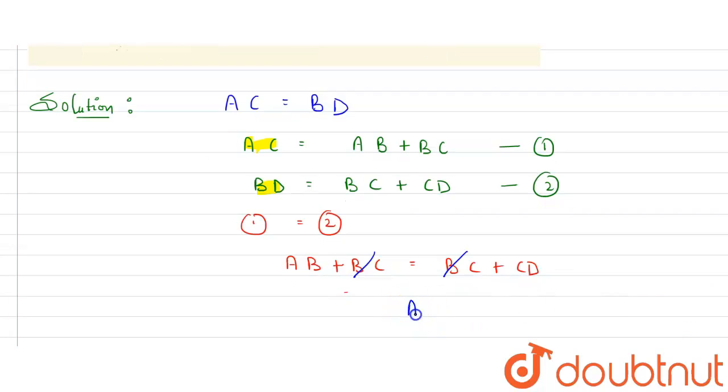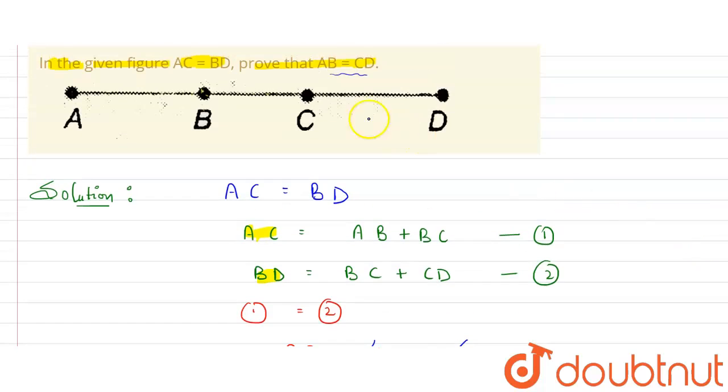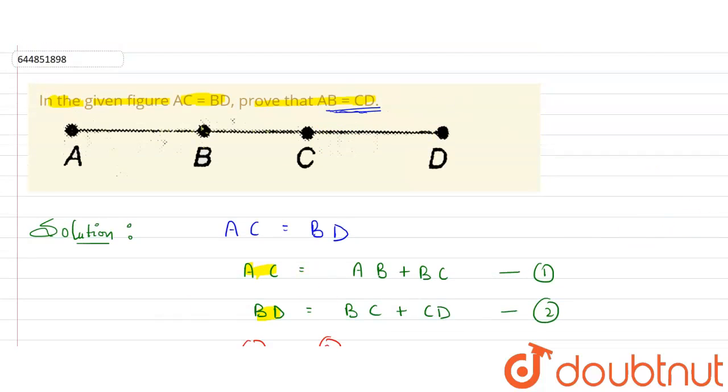So what is left? We are left with AB and here we are left with CD. So we have proved that AB is equal to CD, and this is what we need to prove: AB is equal to CD. So this is our final answer. Thank you.